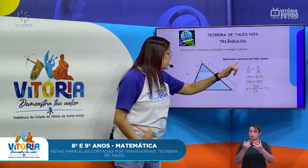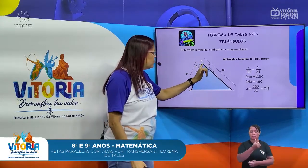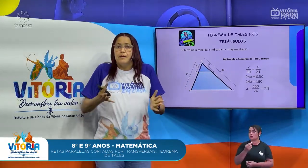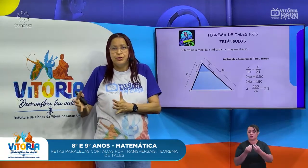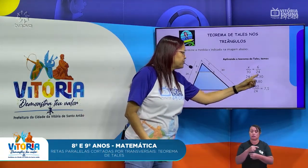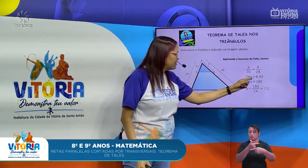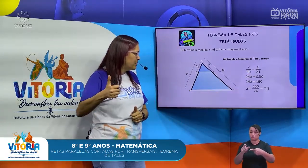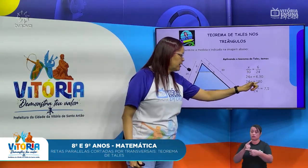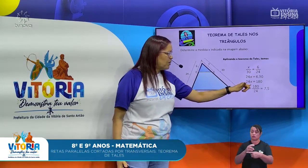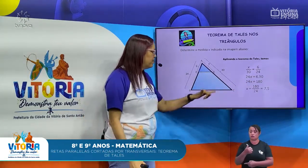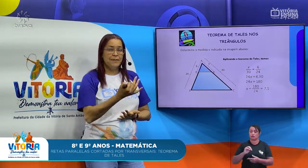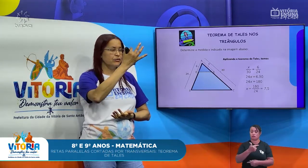Que 6 está para 24, assim como X está para 30. Meios por extremos: X vezes 24 — 24X — que vai ser igual a 6 vezes 30. 6 vezes 30 vai me dar 180. Então, 24X igual a 180. Eu vou isolar o X e passar o que está multiplicando dividindo para o outro lado: 180 dividido por 24.